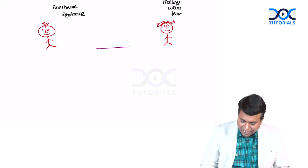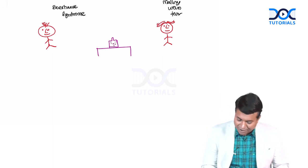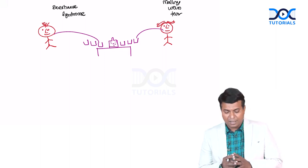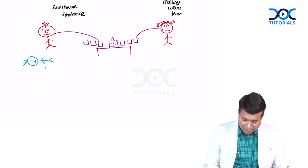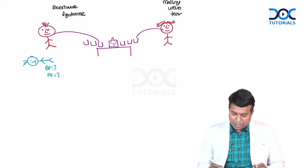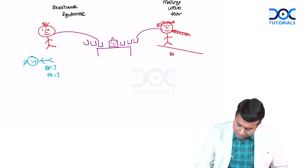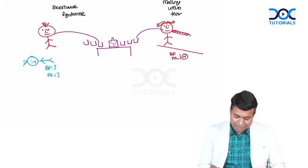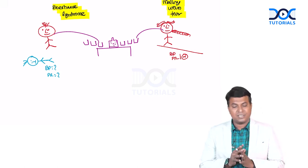Ramu and Somu are friends who spent a night continuously drinking alcohol. Suddenly, Ramu vomited and collapsed — his BP and pulse dropped and he was rushed to hospital. Meanwhile, Somu was vomiting blood but walked into the hospital himself with a normal BP and normal pulse rate, following hematemesis after vomiting. Ramu had Boerhaave syndrome; Somu had Mallory-Weiss.